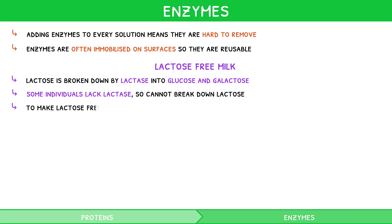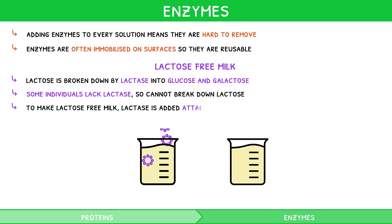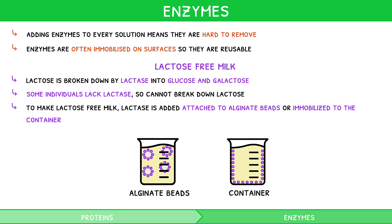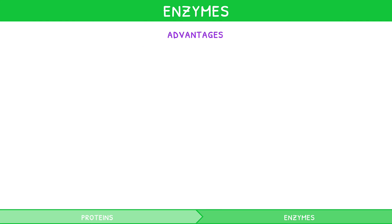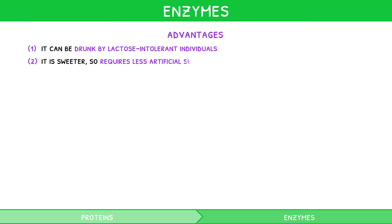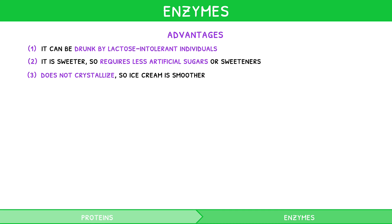In the production of lactose-free milk, lactase is added to milk, attached to alginate beads, or immobilized to the container. This is done so that the lactase breaks down any lactose present. It has several advantages: it can be drunk by lactose-intolerant individuals; it is sweeter, so requires less artificial sugars or sweeteners; it does not crystallize, so ice cream made is smoother in texture; and it is fermented quicker, so it increases production speed of yogurt and cheese.